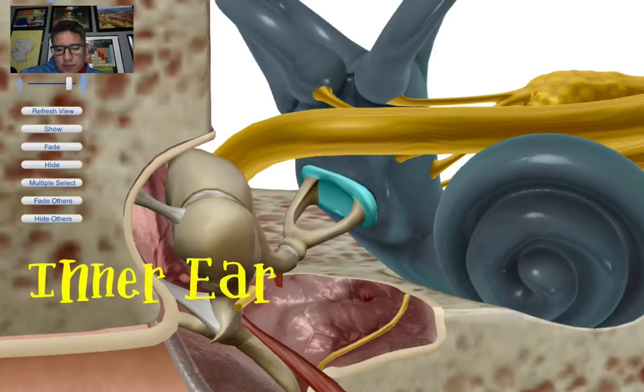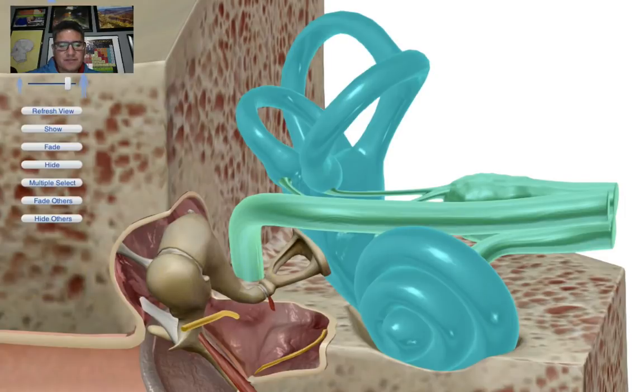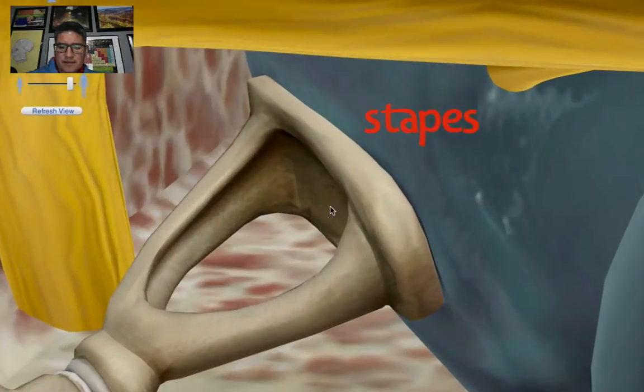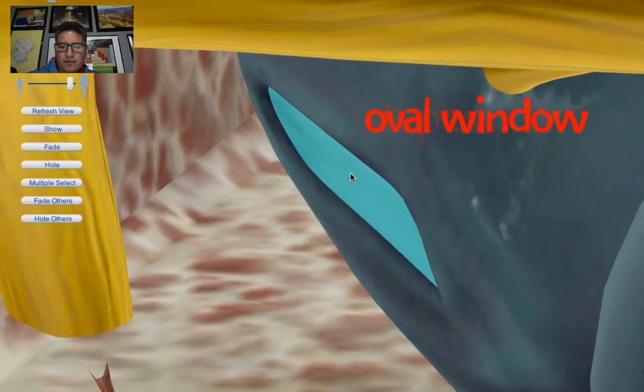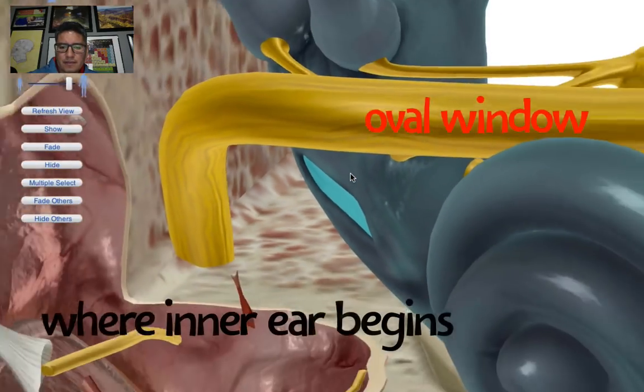As we look at the oval window, we are now getting access to the inner ear. This is the final aspect of the processing of hearing. From the stapes, let me hide the stapes here, and then you have the oval window. Let me back up a little bit.